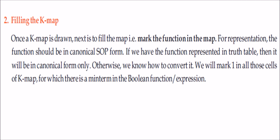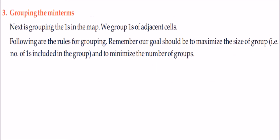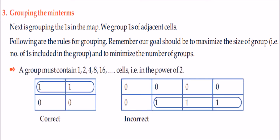To fill the K-map: for SOP form, fill 1s where you have expression values; for POS, fill 0s. Grouping rules are: you must group in powers of 2 only (2, 4, 8, 16). Always maximize group size — try 16 first, then 8, then 4, then 2. Groups should be adjacent cells; diagonal grouping is not allowed.